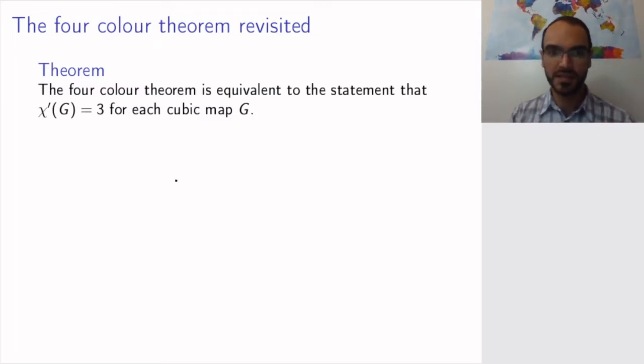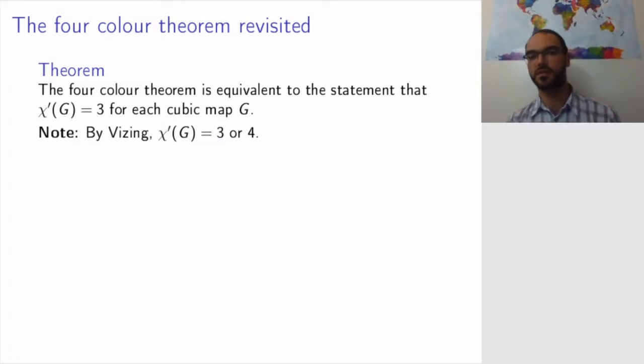So cubic means that the degree of each vertex is equal to 3. And, perhaps surprisingly, the four-color theorem is equivalent to the statement that the chromatic index of any cubic map is equal to 3. And remember, Vizing tells us that the chromatic index is either 3 or 4, so perhaps it's surprising that if we can prove that it's always equal to 3, then we have proven the four-color theorem.